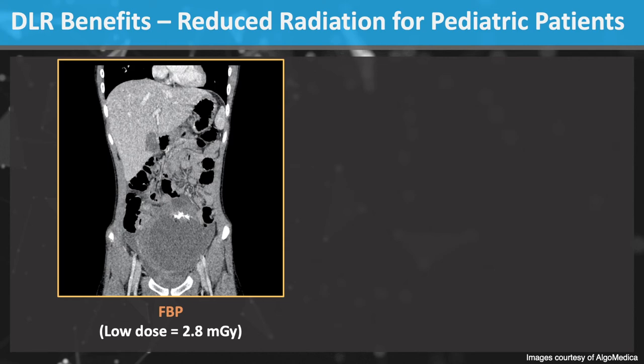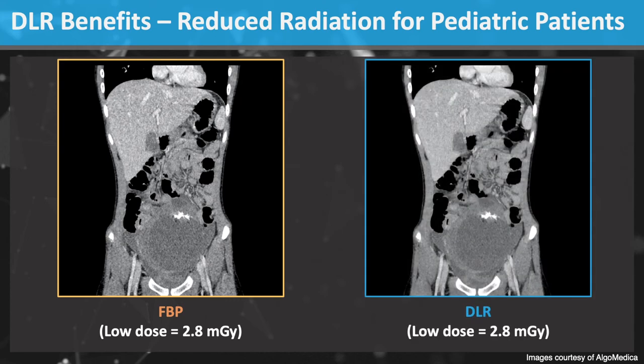Radiation dose is most important in screening exams and in pediatric patients. This pediatric patient had a low radiation dose scan. The images on the left are noisy and of low quality. After DLR, the same image acquisition has reduced image noise and improved image quality. Look at the liver, for example, and notice the reduced image noise.